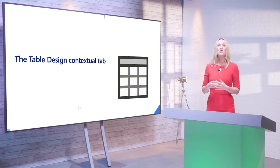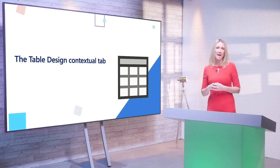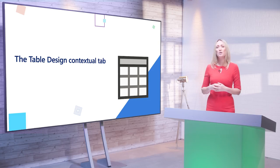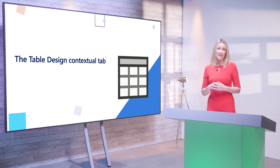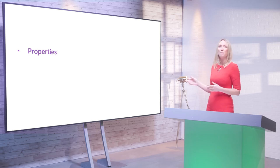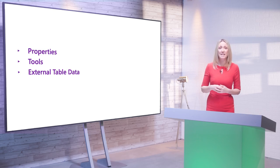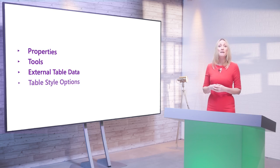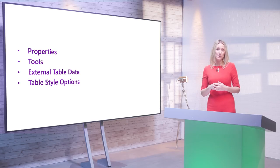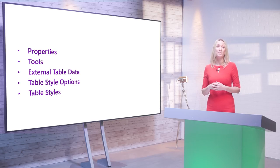Let's start with the table design contextual tab and briefly explore the various groups, commands, and options that they contain. The groups are: the properties group, the tools group, the external table data group, the table style options group, and the table styles group.